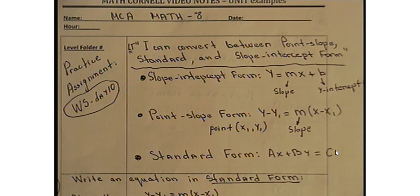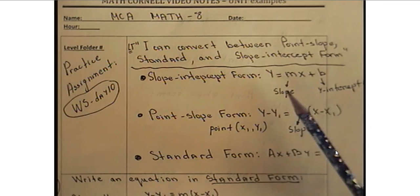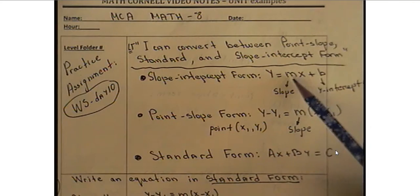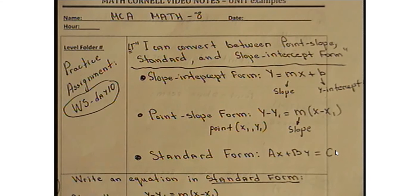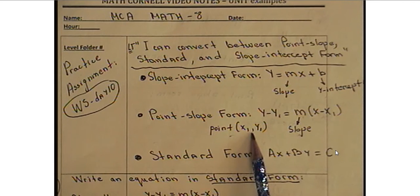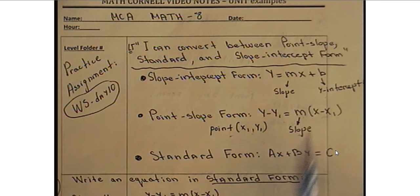First, write down all three forms. On your formula sheet you will be given y equals mx plus b, called slope-intercept form — m stands for slope and b is the y-intercept. Then we move to point-slope form: y minus y1 equals m times x minus x1. We call it point-slope form because it uses the slope and the coordinates of a point, which we substitute in to do calculations and answer the question.